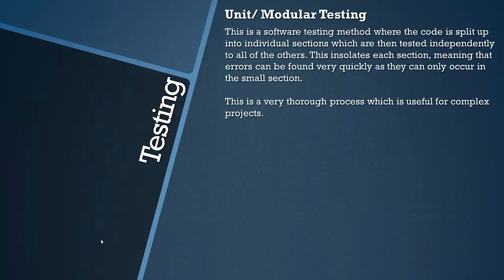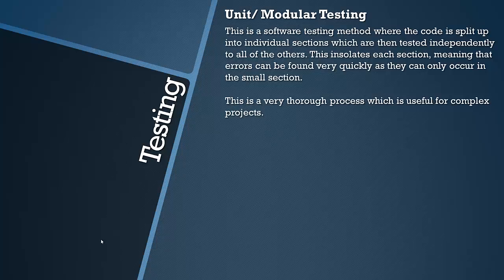Now let's look at what unit — also called modular — testing is. This is a software testing method where the code is split up into individual sections which are then tested independently from all of the others. This means that each section of code is isolated, meaning errors can be found very quickly. If each section of code is run and an error is found in one of them, you know the error is from within that section, so it can be isolated, removed, and fixed with ease. This is obviously very thorough and useful for complex projects with a lot of scope to go wrong.